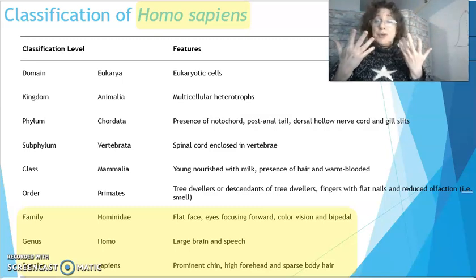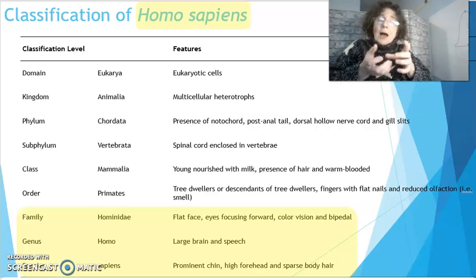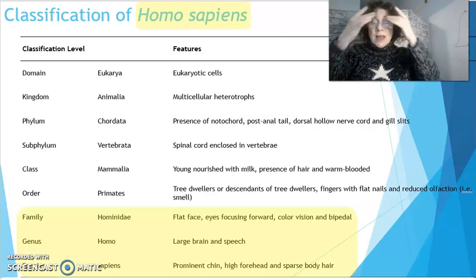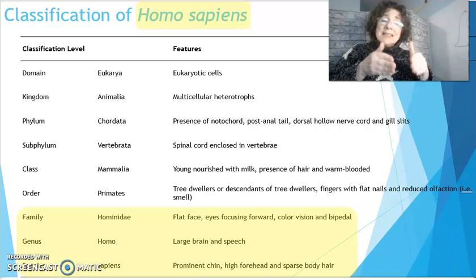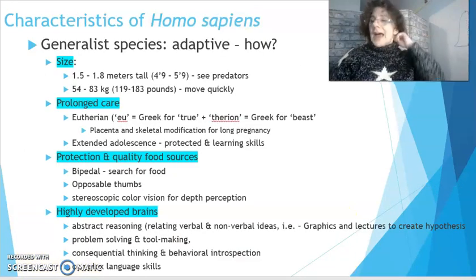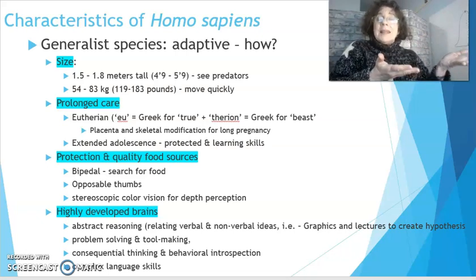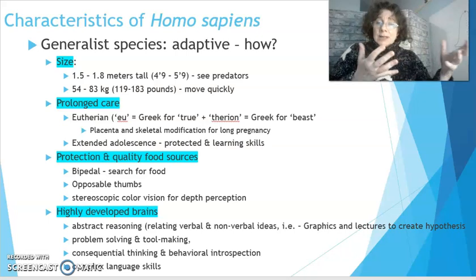When we really get into genus and species, it depends on our brain — what it can do to produce speech, which sets us apart. What nails it at the species level is that these organisms can intermate and have fertile offspring. Other characteristics that distinguish our species include the chin, the high forehead, and sparse body hair. Our big brain also allows us to adapt to many different living situations — one of the key characteristics of being a homo sapien.